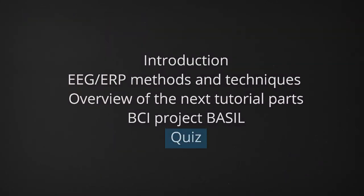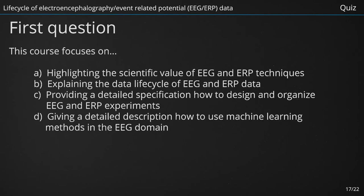Now it is time for a short quiz. This course focuses on: A. Highlighting the scientific value of EEG and ERP techniques. B. Explaining the data life cycle of EEG and ERP data. C. Providing a detailed specification how to design and organize EEG and ERP experiments. D. Giving a detailed description how to use machine learning methods in the EEG domain. The right answer is B — Explaining the data life cycle of EEG and ERP data.